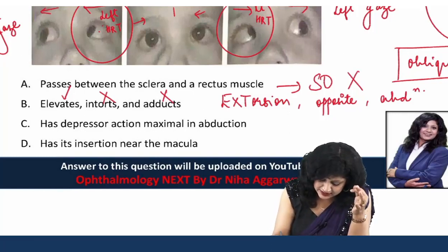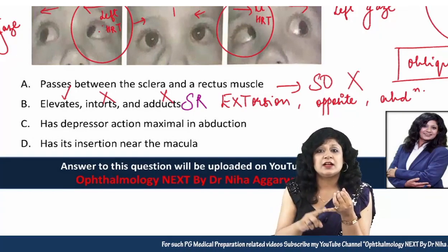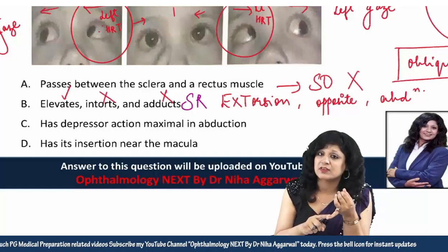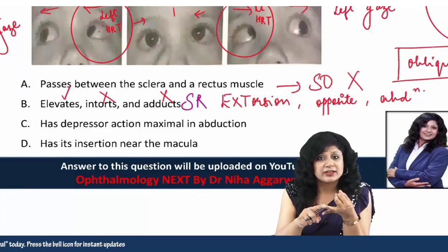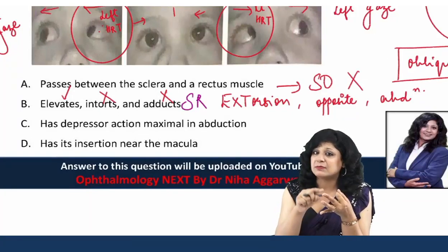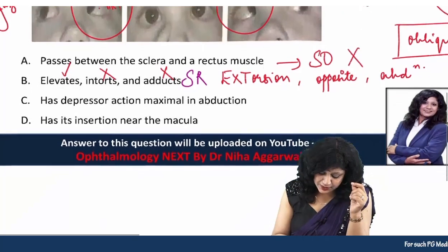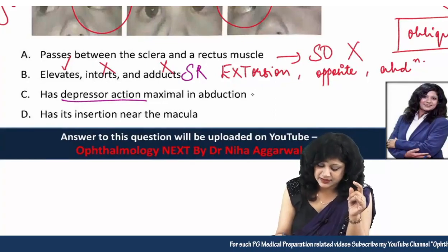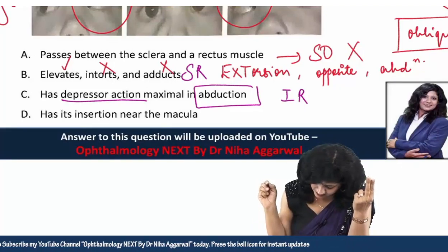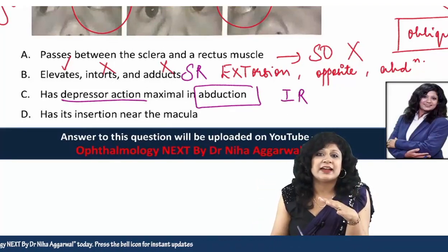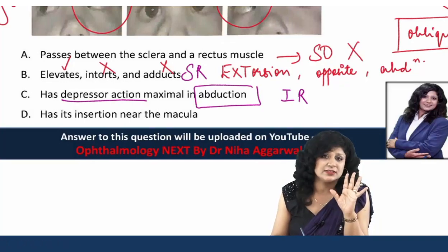What muscle elevates, intorts, and adducts? That is the superior rectus — it is a rectus muscle moving the eye in the same direction, causing elevation, then intorsion since superiors intort, and adduction since recti adduct. Option three has a depressor action maximal in abduction — that points to the inferior rectus, so option three is also eliminated.